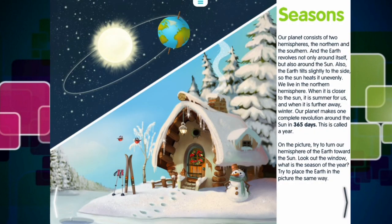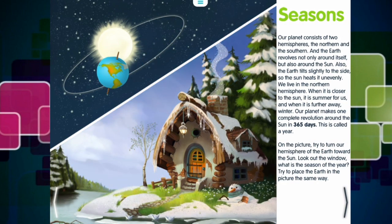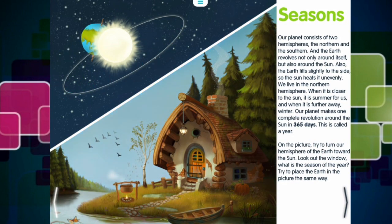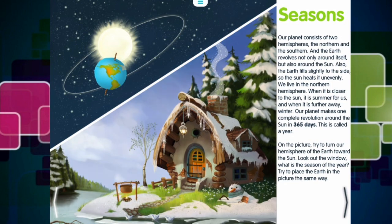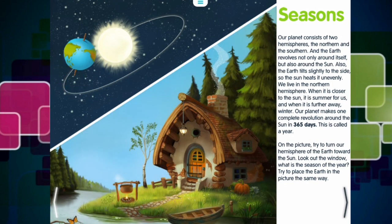Our planet consists of two hemispheres, the northern and the southern. And the Earth revolves not only around itself, but also around the sun. Also, the Earth tilts slightly to the side, so the sun heats it unevenly. We live in the northern hemisphere. When it is closer to the sun, it is summer for us. And when it is further away, winter. Our planet makes one complete revolution around the sun in 365 days. This is called a year. On the picture, try to turn our hemisphere of the Earth toward the sun. Look out the window. What is the season of the year? Try to place the Earth in the picture the same way.